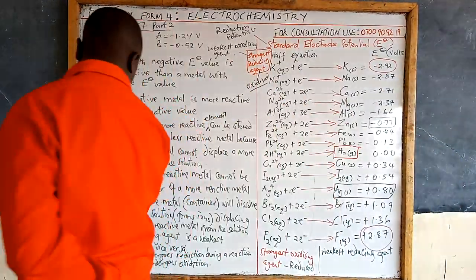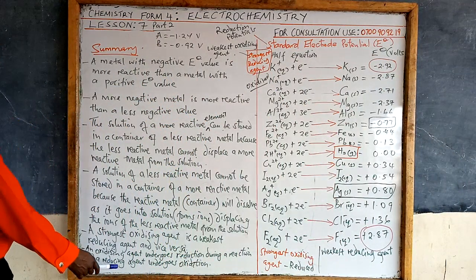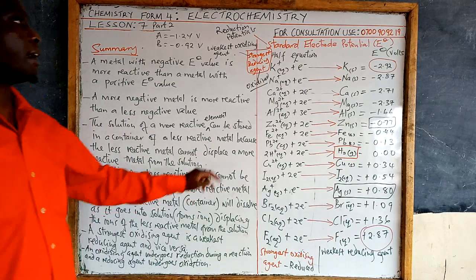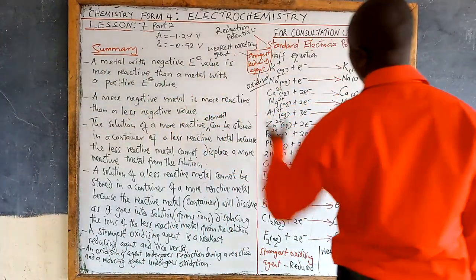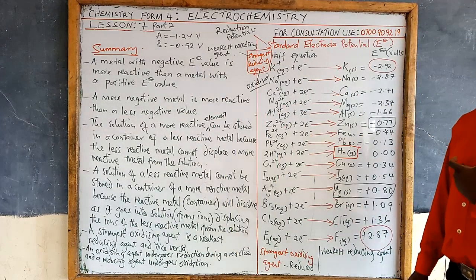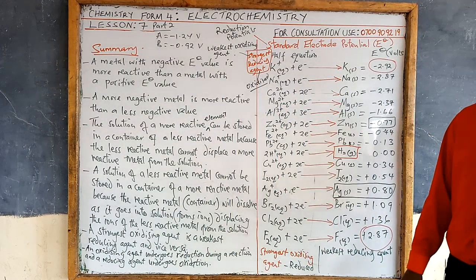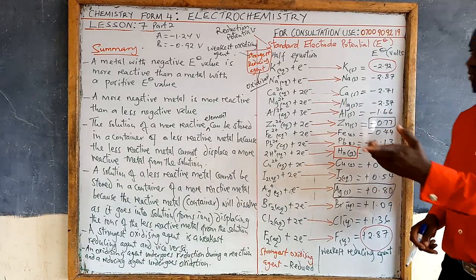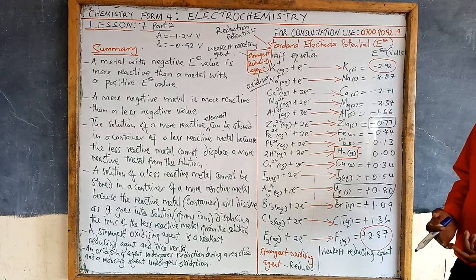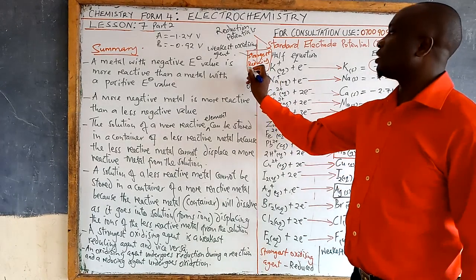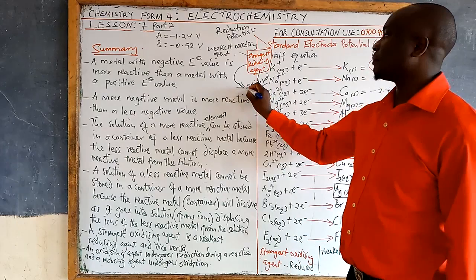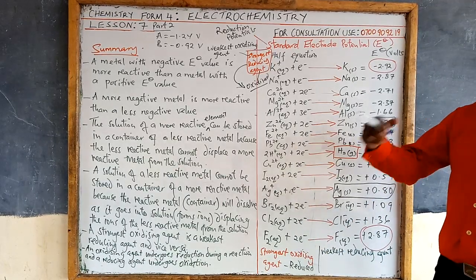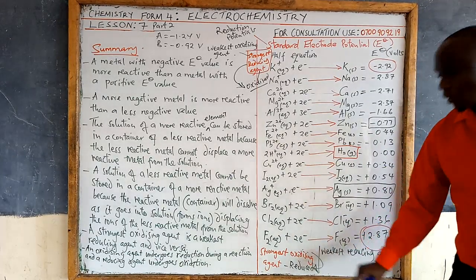Finally, an oxidizing agent undergoes reduction during a reaction, and a reducing agent undergoes oxidation. A reducing agent reduces others — in the process, it itself becomes oxidized. An oxidizing agent oxidizes others — in the process, it itself becomes reduced. These are the key concepts you need to understand very clearly.